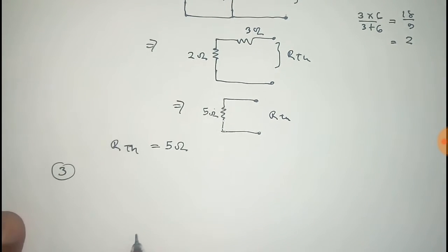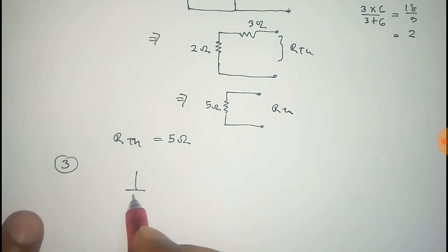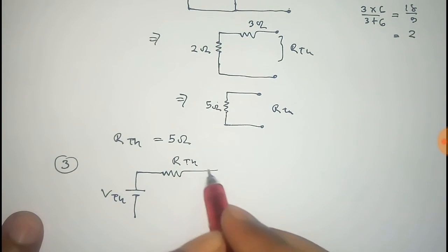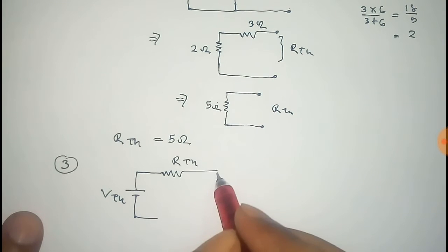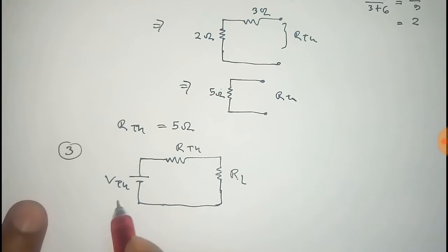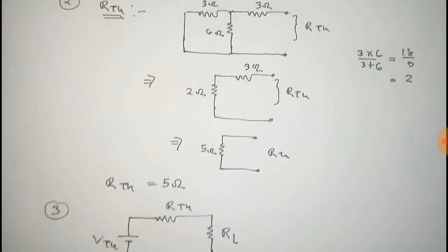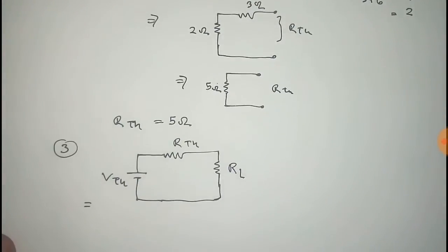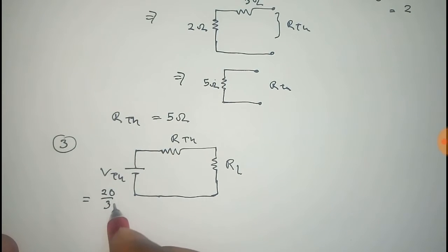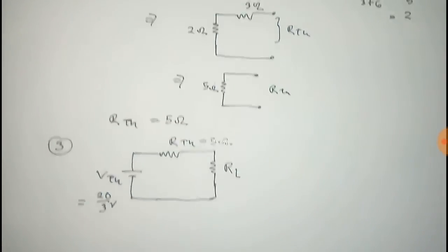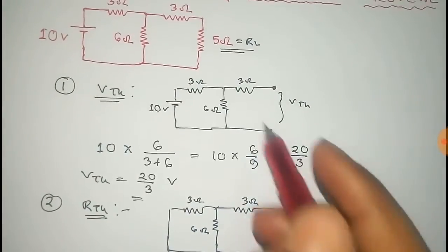Step 3 is to draw the Thevenin equivalent circuit. The Thevenin equivalent circuit has the Thevenin voltage connected with the Thevenin resistance in series with the load resistor. The value of the Thevenin voltage is 20/3 volts, the value of the Thevenin resistance is 5 ohm, and the value of the load resistor as given in the problem is 5 ohm.